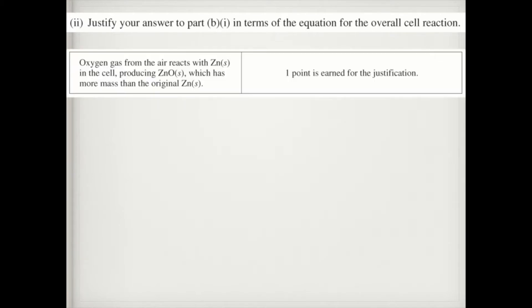It asks you to justify your answer in terms of the equation for the overall cell reaction. Well, since oxygen is reacting with zinc, as that reaction proceeds, the overall reaction is oxygen reacting with zinc to produce zinc oxide. Since you're taking zinc solid and producing zinc oxide solid, zinc oxide solid has more mass than just zinc itself. So that's why the mass would increase.